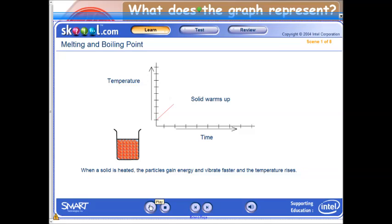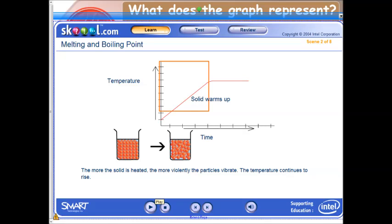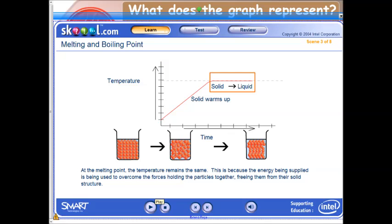When a solid is heated, the particles gain energy and vibrate faster, and the temperature rises. The more the solid is heated, the more violently the particles vibrate. The temperature continues to rise. At the melting point, the temperature remains the same. This is because the energy being supplied is being used to overcome the forces holding the particles together, freeing them from their solid structure.